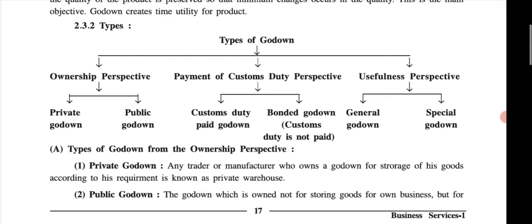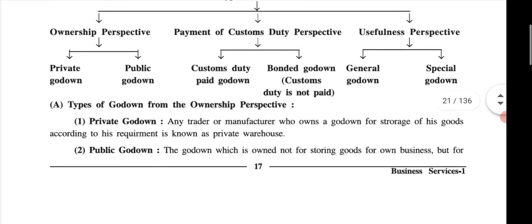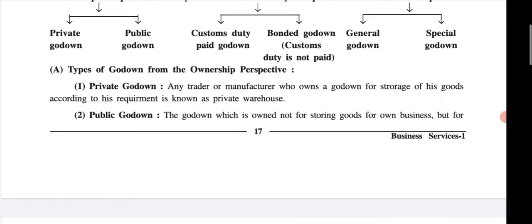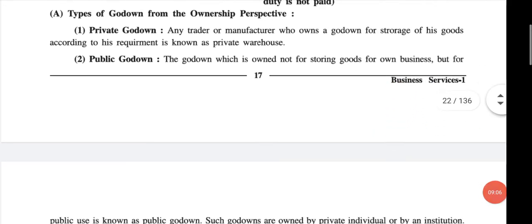From the custom duty perspective there are custom duty paid and custom duty not paid godowns. From the usefulness perspective there are general and specific godowns. A specific godown provides special long-term service, while a general godown stores normal general goods.